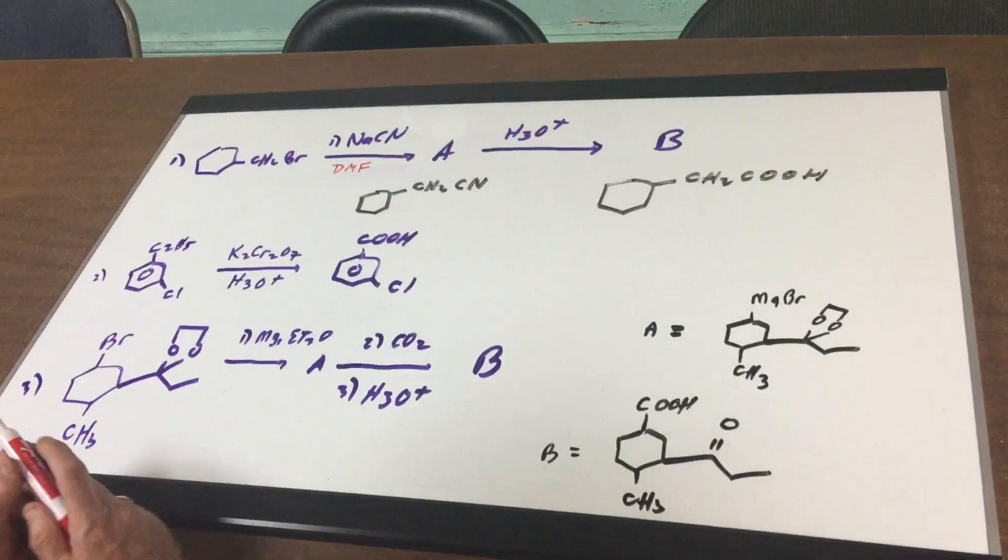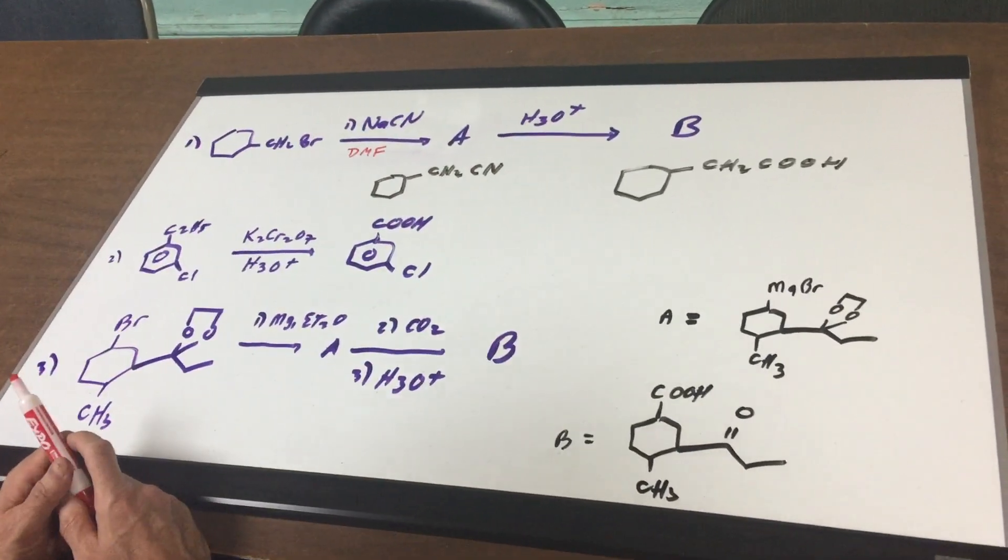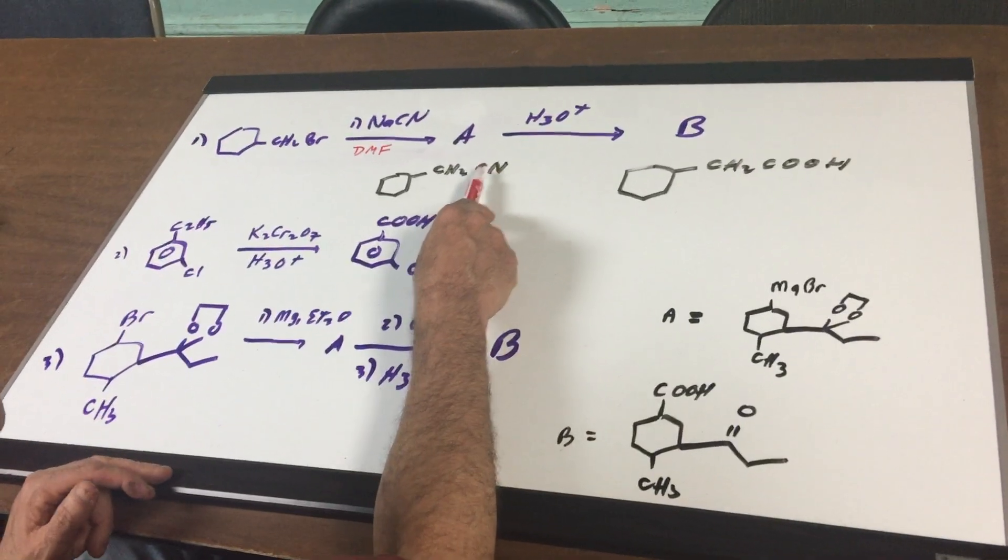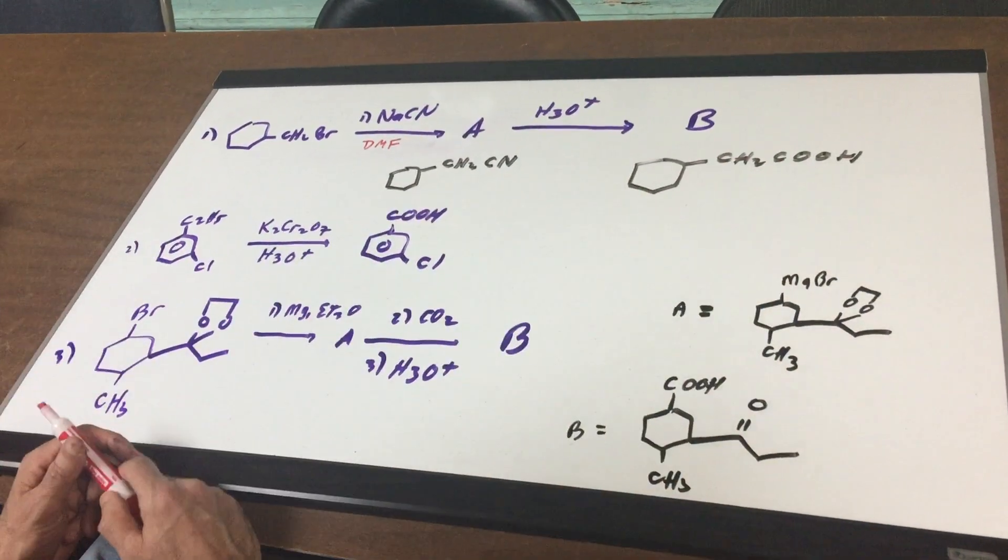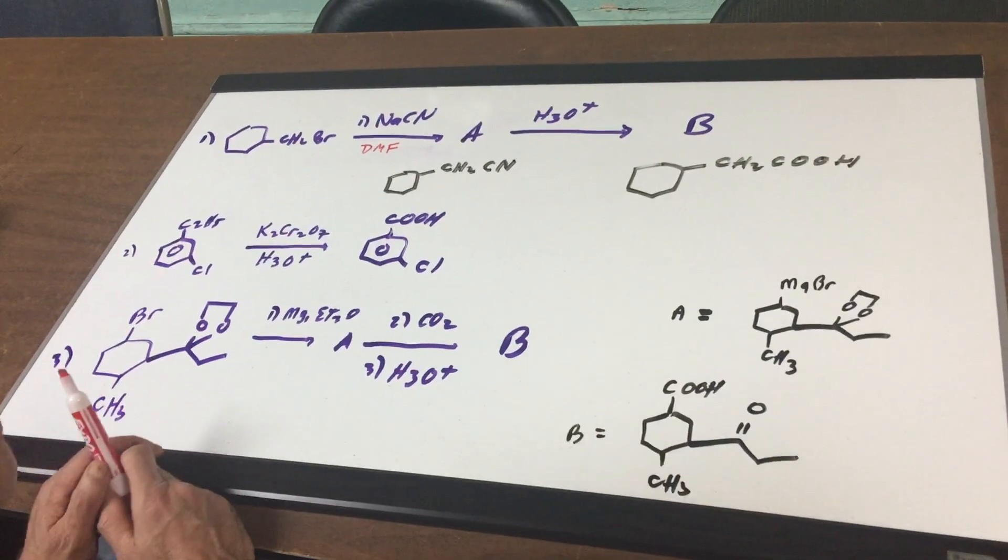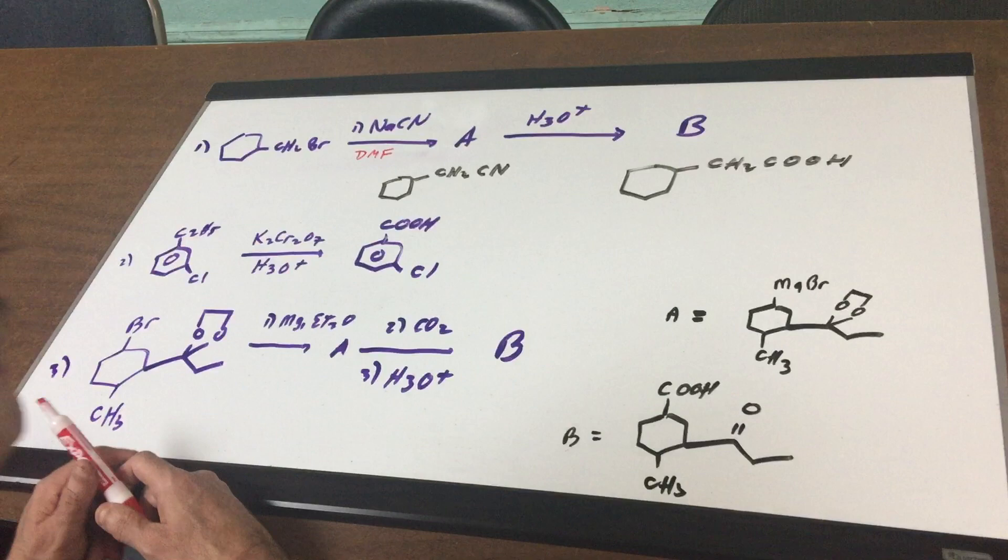NACN is going to do a simple SN2. So we kick off the bromine and put on the cyanide. We make the nitrile. Anytime you add acid to the nitrile, we hydrolyze it and convert it into a COOH group. So a very nice way to make a carboxylic acid is to hydrolyze a nitrile.